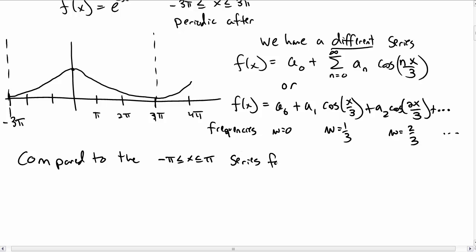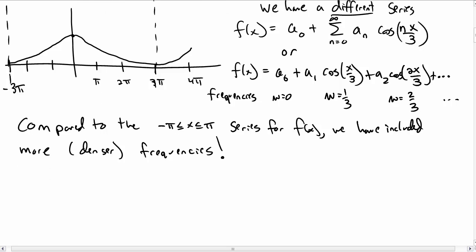As we extend the region in which we write our Fourier series, we include more frequencies, or to be more precise, we're including a denser amount of frequencies. The density of the frequencies that we're using increases, because there's an infinite number of frequencies in both cases.